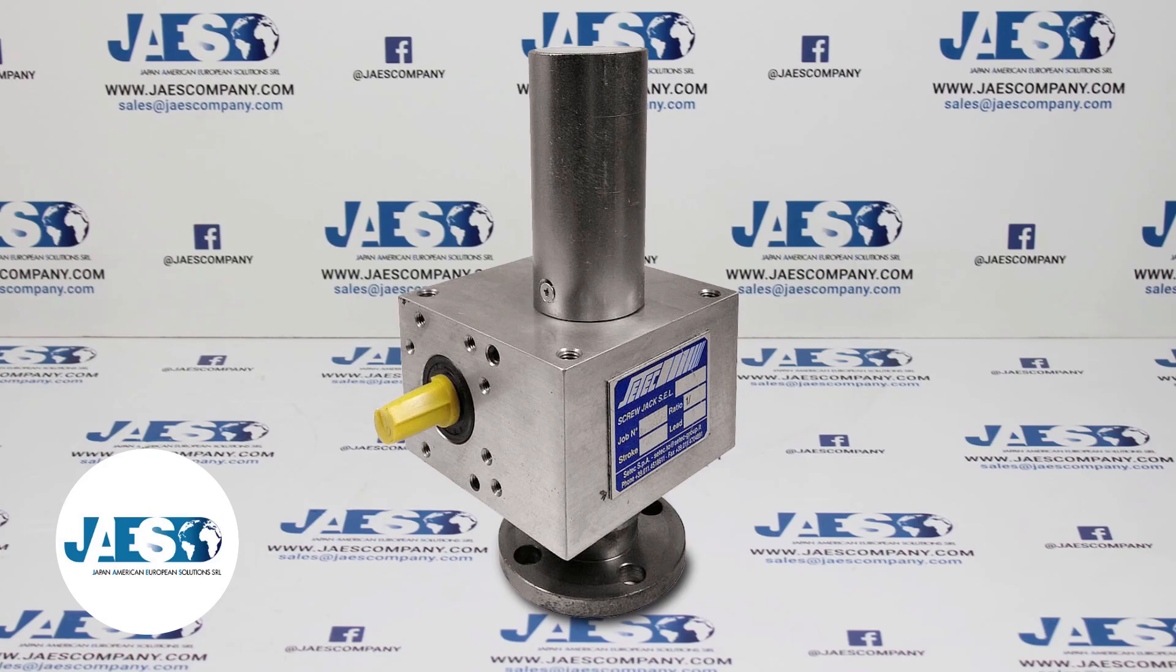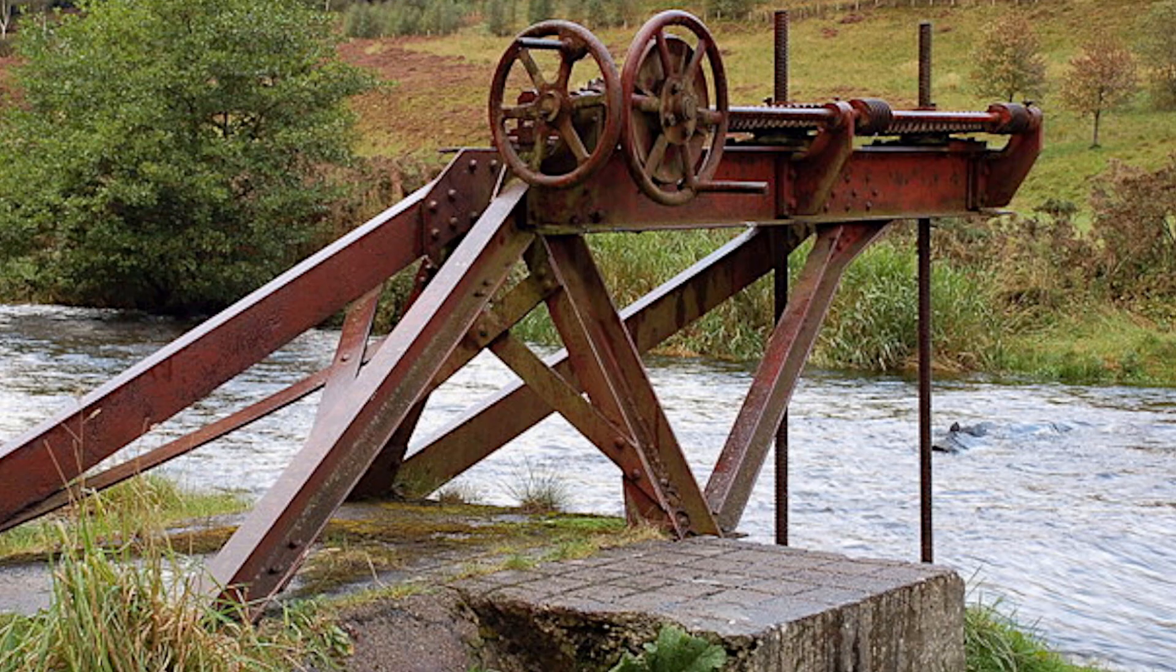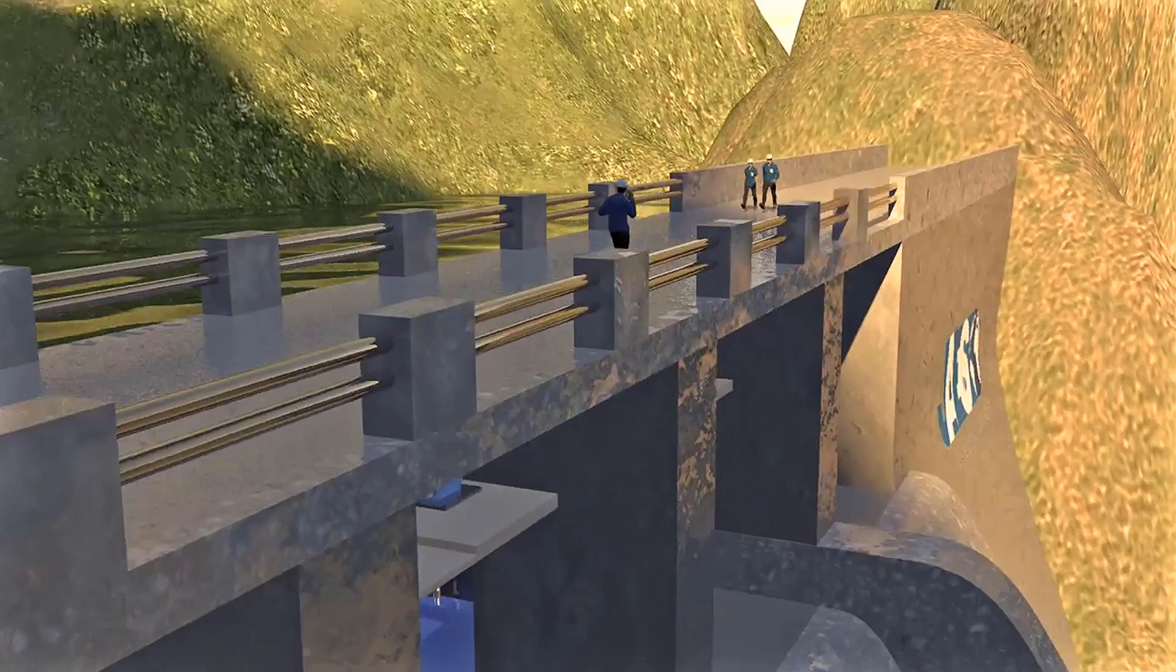Historically, the mechanical screw jacks were used as a dam shutter control system along rivers and streams. These devices were designed specifically to lift and lower the sluice gates, and they were manually operated. Today, however, each gate is equipped with an electric motor. Thanks to bevel gears, cardan joints, and couplings, this motor is able to transmit motion to screw jacks.